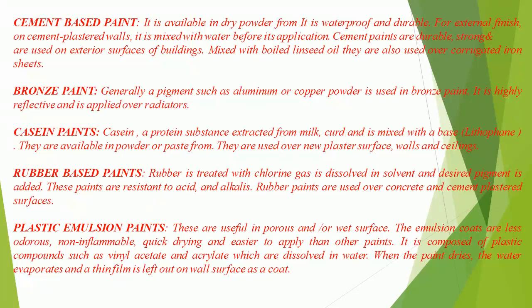Plastic emulsion paints: These are useful on porous and/or wet surfaces. The emulsion coats are less odorous, non-inflammable, quick drying, and easier to apply than other paints. They are composed of plastic compounds such as vinyl acetate and acrylate, which are dissolved in water. When the paint dries, the water evaporates and a thin film is left on the wall surface as a coat.